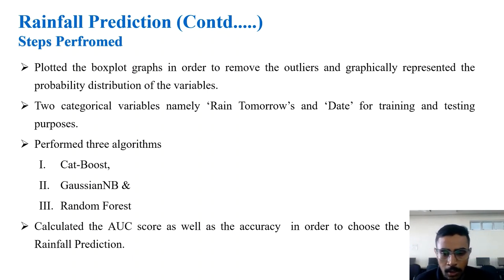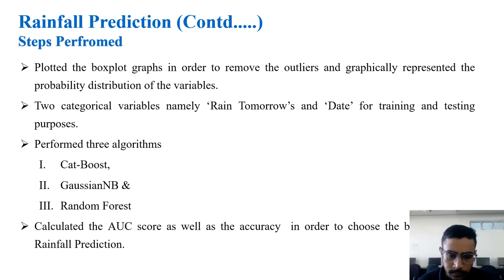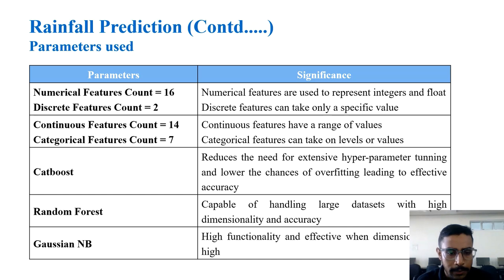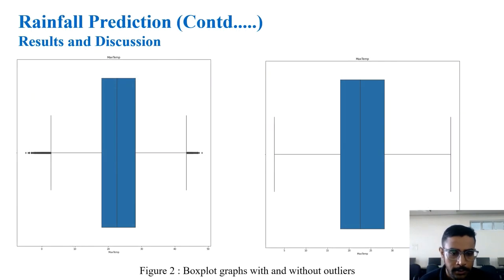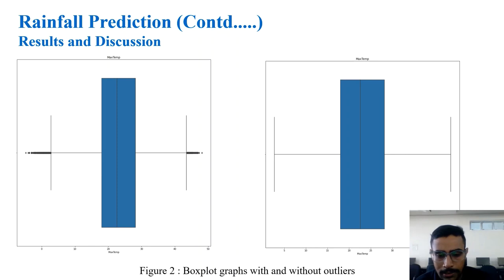We used two categorical variables — RainToday and Date — for training and testing purposes. We performed three algorithms: CatBoost, Gaussian Naive Bayes, and Random Forest. The parameters included 16 numerical features, 2 discrete features, 14 continuous features, and 7 categorical features. The box plot on the left shows outliers, which were removed, as shown on the right side.